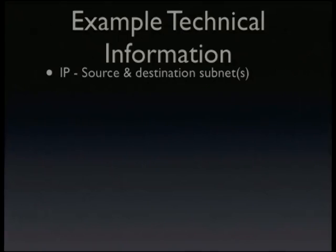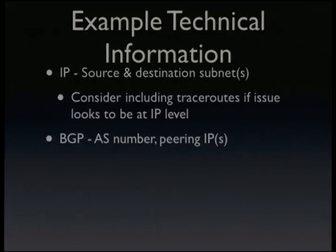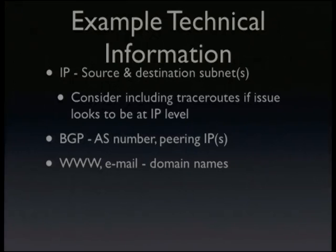There's a bunch of technical information you might want to include. Assuming it's internet related: source and destination IPs — very useful. If it looks to be an IP layer issue, include traceroute, but I'll have more on that later. If this is BGP — say internet exchange, that sort of thing — include AS numbers. For those of us that live our life in BGP, if I don't have an AS number, you don't exist. If you're doing web-based issues or email, include the domain names. I don't care that your company is whatever.com if the domain that's actually got the problem is product.com.